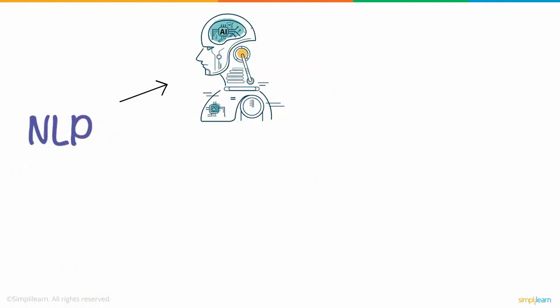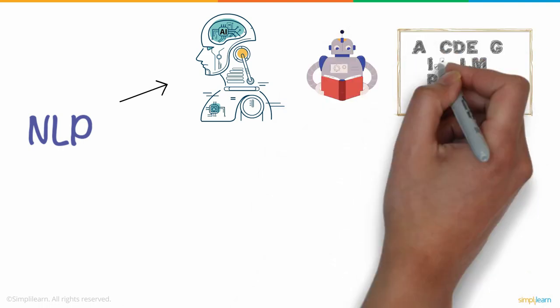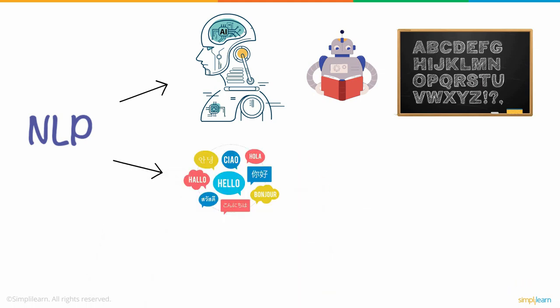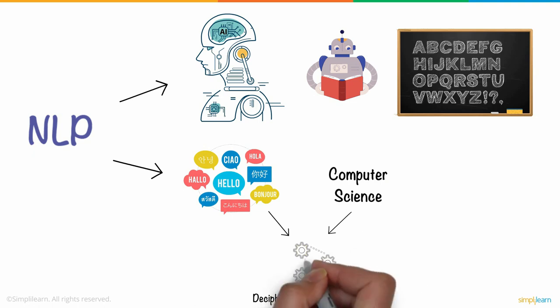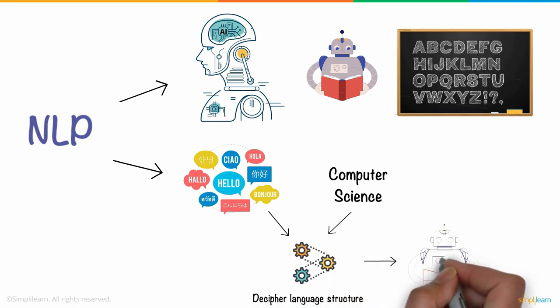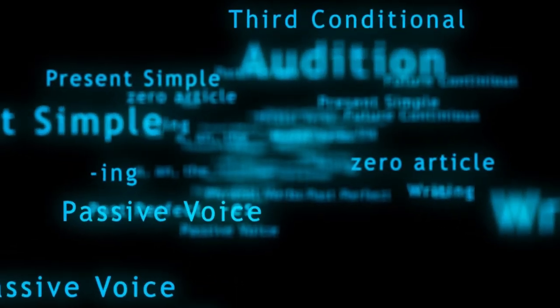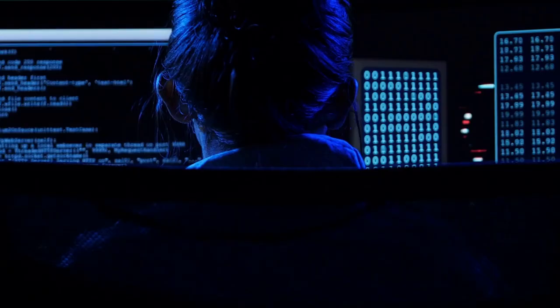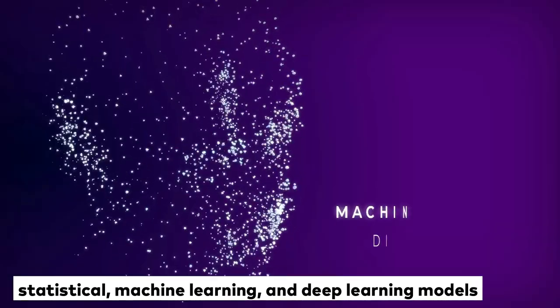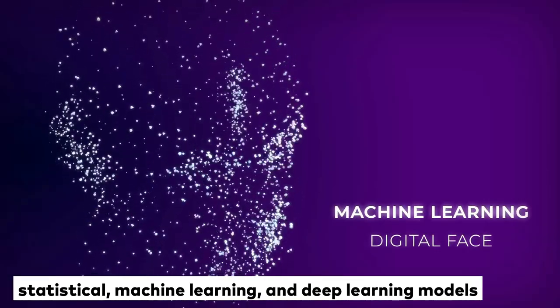What is Natural Language Processing? Natural Language Processing NLP refers to the branch of computer science and more specifically, the branch of artificial intelligence or AI, concerned with giving computers the ability to understand text and spoken words in much the same way human beings can. NLP combines computational linguistics, rule-based modeling of human language, with statistical machine learning and deep learning models.